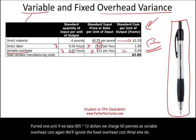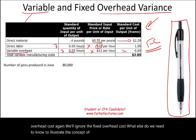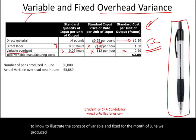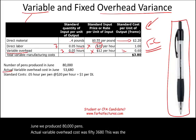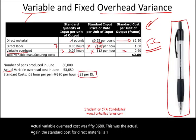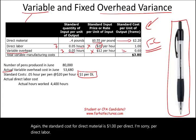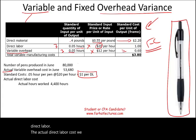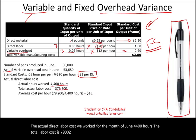What else do we need to know to illustrate the concept of variable and fixed? For the month of June, we produced 80,000 pens. The actual variable overhead cost was $53,680. The standard cost for direct material is $1 per direct labor hour. For actual direct labor, we worked 4,400 hours for the month of June. The total labor cost is $79,200. Therefore, the average cost per hour is $79,200 divided by 4,400, which equals $18.